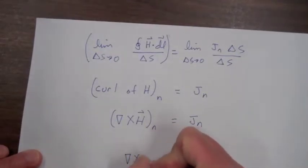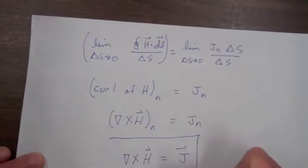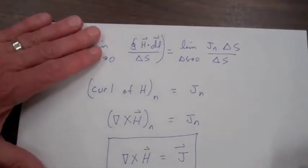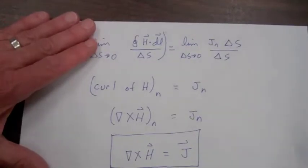So the curl of H would just then give us the total current density. And this is Ampere's circuital law in point or differential form.